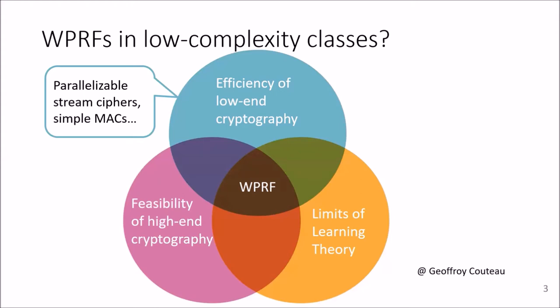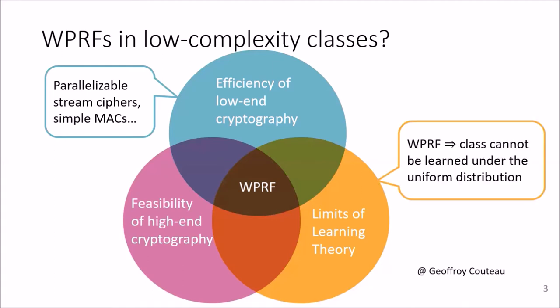Second, it has implications to learning theory, which asks which functions can be learned efficiently through black box queries. And if a complexity class contains a weak PRF, then this class cannot be learned under the uniform distribution, so it gives limitations in learning theory.